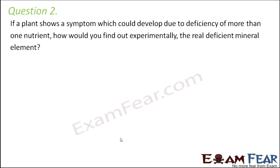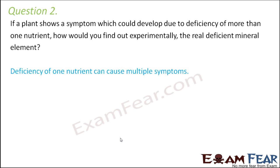Let us look at the next question. If a plant shows a symptom which could develop due to deficiency of more than one nutrient, how would you find out experimentally the real deficient mineral element? As I mentioned before, deficiency of one mineral — for example, if a plant is deficient in nitrogen — there might be multiple symptoms: yellowing of leaves, retarded growth, delayed flowering. Similarly, if a plant has yellowing of leaves, that can be because of so many minerals — nitrogen, phosphorus, sulfur, or chlorine.